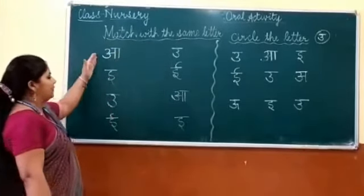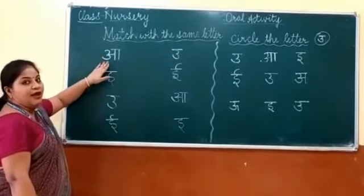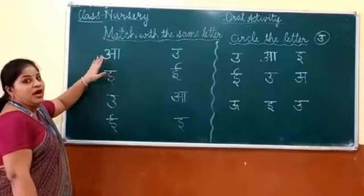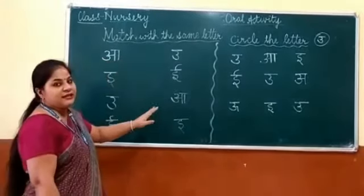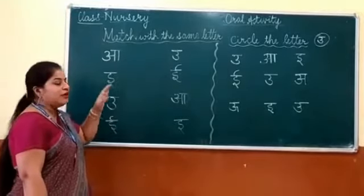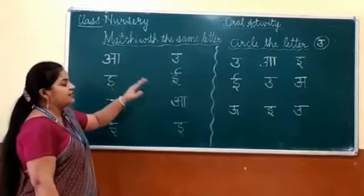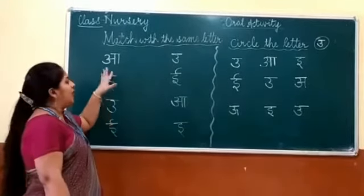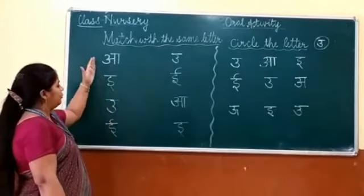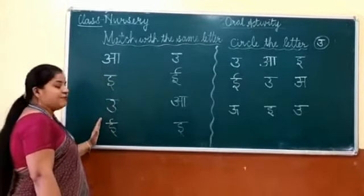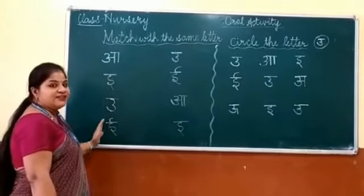Here are some three letters. This is there — A, A, and second. Match with the same letter, voluntary letters. Now, on this side we have to choose Hindi letters.